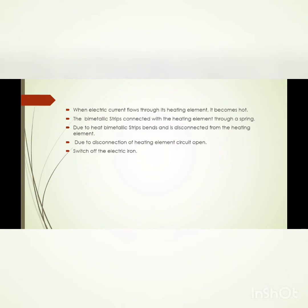When we switch on the electric iron, the red part is called the temperature controller. When electric current flows through the heating element, the heating element starts working. When the temperature rises and disconnection of the heating element occurs, the circuit opens. When it is disconnected, the circuit will open — this is the switch of the electric iron.